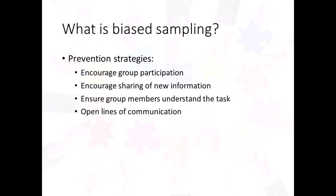So how can we prevent biased sampling from happening? First, leaders and organizations should encourage members to participate fully in the group. If a member hasn't said much, ask them to share their thoughts — they likely know something that could be useful to the group. Second, encourage members to share new information; periodically pause the discussion to ask if anyone has new information or questions that need to be answered before a decision is made. Third, make sure all group members understand the decision, their task, and the context — the more they know, the better prepared they are to find gaps and identify useful information. Fourth, open lines of communication so that people can share up and down the hierarchy, as well as horizontally across groups and departments. Together, these strategies help illuminate pertinent information that can save the group from making poor decisions.